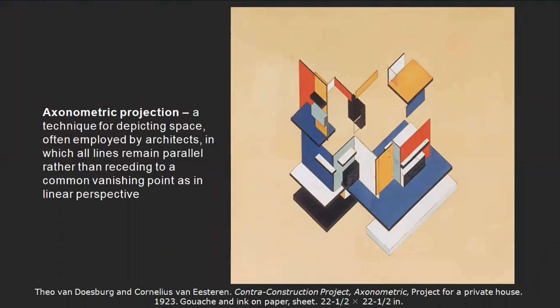Another development from this is called axonometric projection — a technique for depicting space, often employed by architects, in which all lines remain parallel rather than receding to a common vanishing point, as in linear perspective. In this picture by Theo van Doesburg and Cornelius van Esteren, this kind of drawing lends itself well to architectural drawings showing the floor plan in space. Again, the left and right sides of these forms recede at parallel oblique lines, so nothing moves into a vanishing point.